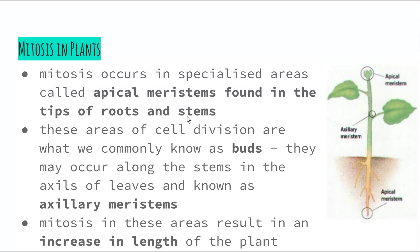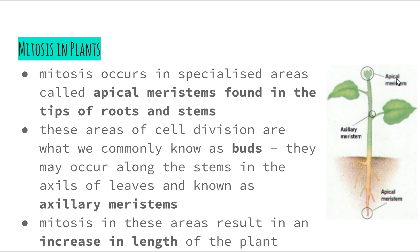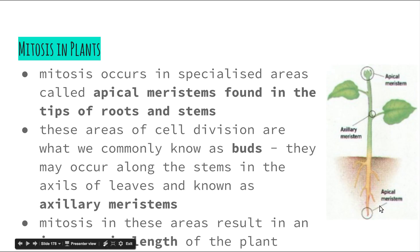Mitosis occurs in specialized areas of plants called the apical meristems, which are found in the tips of the roots and the tips of the stems. Apical simply means the apex — the very end. These areas of cell division are what we commonly know as buds, found on the ends of stems and roots. They can also occur along the stems in the axials of the leaves — where the leaf joins onto the stem — and these are known as axial meristems.